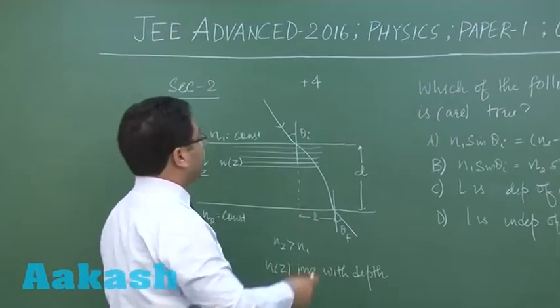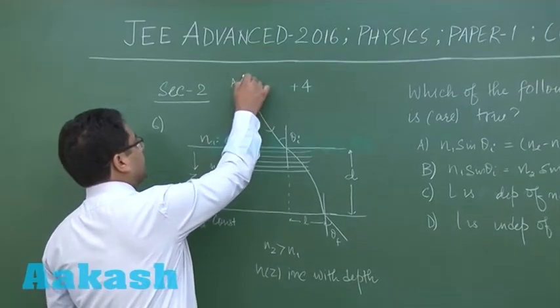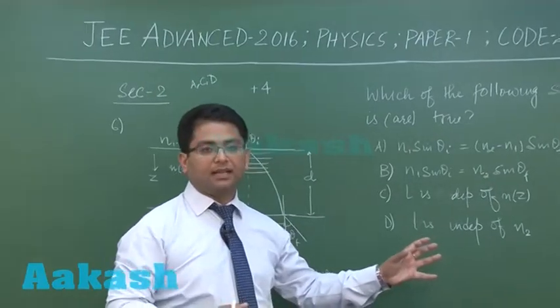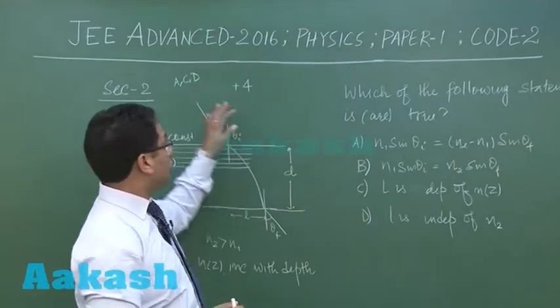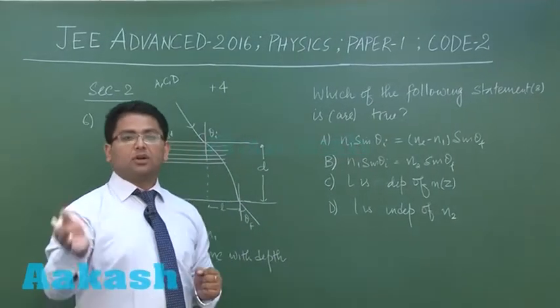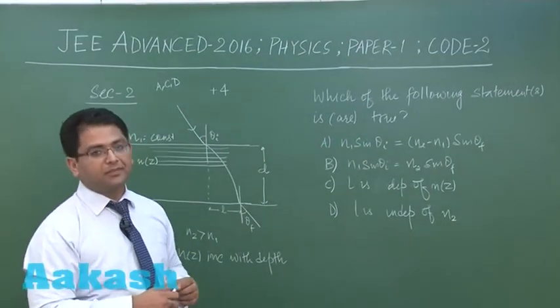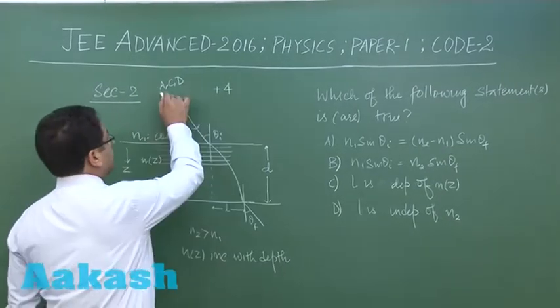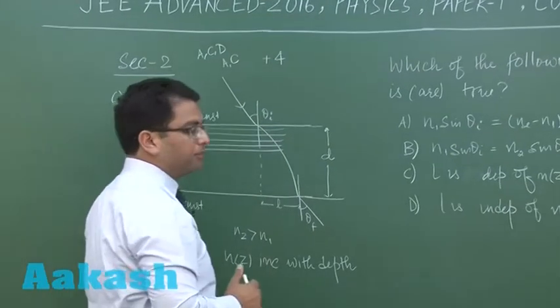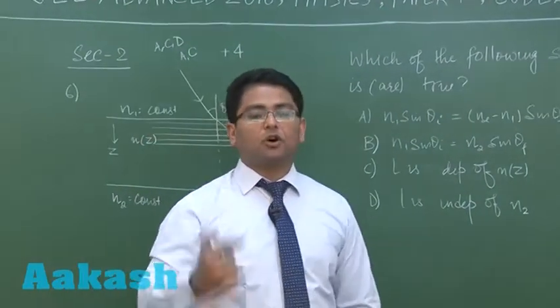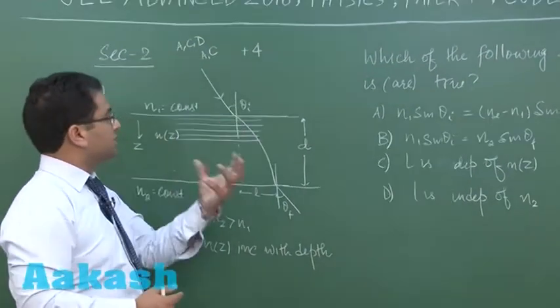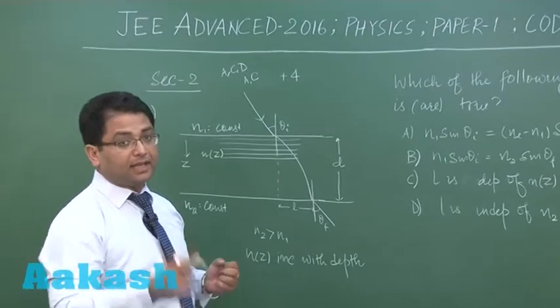For instance, if A, C, D are the correct options of this particular question and if someone bubbles all three options in this format A, C, D, then four marks would be awarded. There is also a partial marking scheme. In that situation, suppose A, C, D are the correct options and someone bubbles only A and C, then for each correct option one mark would be awarded, so in this case two marks would be scored by the candidate.